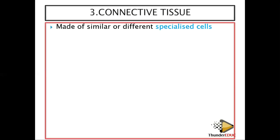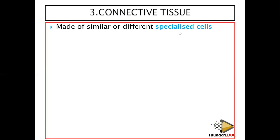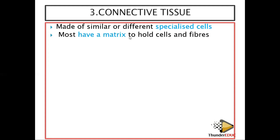Connective tissue is made up of similar or different specialized cells. If you look at blood cells, they have different specialized cells — you have the red blood cells, the white blood cells, and the platelets. If you look at neurons, you also have different types of neurons.